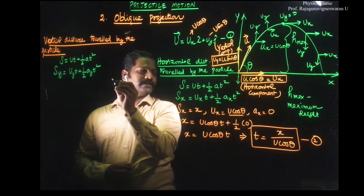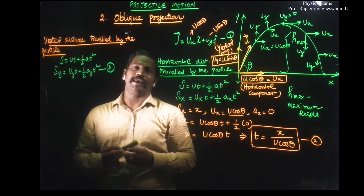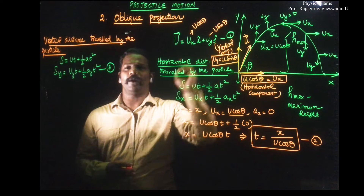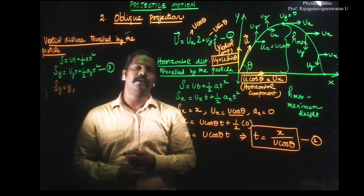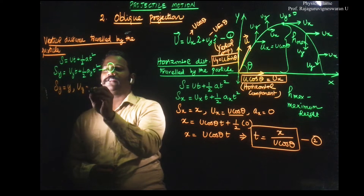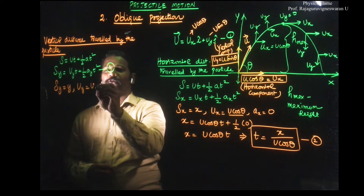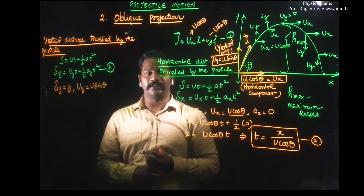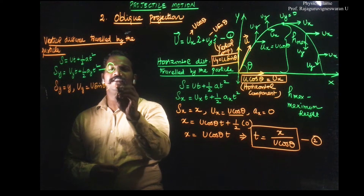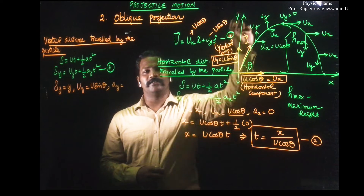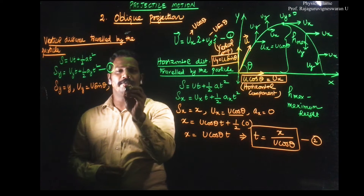This is equation number 3. So, y is equal to — that's equation number 3. The vertical component u_y is equal to u sinθ, and u_x is equal to u cosθ. The vertical component is u_y = u sinθ. The acceleration in the vertical direction is due to gravitational force in the downward direction, so it is minus g.